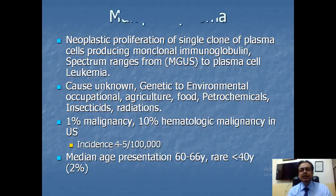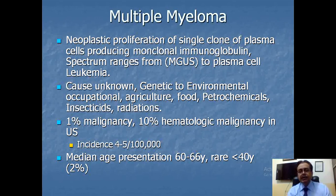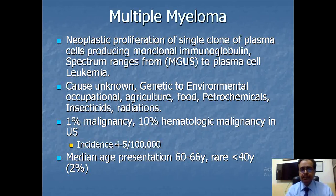The definition of multiple myeloma is that it is a neoplastic proliferation of a single clone of plasma cells. In other words, it is a cancer of the bone marrow — a hematological cancer — in which there is production of monoclonal immunoglobulins. The spectrum ranges from MGUS, meaning monoclonal gammopathy of unknown significance, to plasma cell leukemia. The exact causes remain unknown.